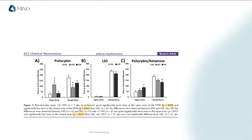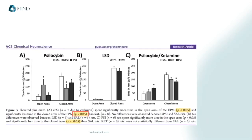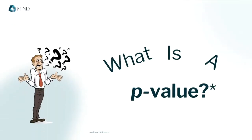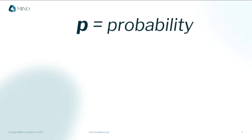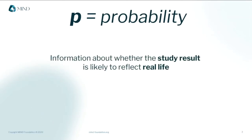So let's say you're reading a scientific paper and you come across something like this: p is less than 0.05. And that's left you wondering, what is a p-value? Well, the p stands for probability. Basically, it gives you information about whether the result found in the study is likely to also be found in real life. But it's a bit more complicated than that.